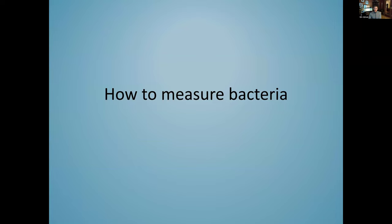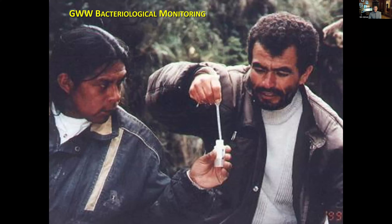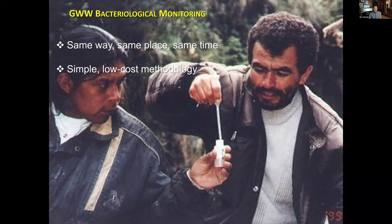Let's talk about how we measure bacteria. Global Water Watch always emphasizes doing it the same way, same place, same time — they want you to be consistent and use consistent methodology. In terms of same time: in colder months bacteria don't survive as well, so in warmer months you may find higher numbers than in winter. Their philosophy is to give people simple, low-cost methodology, teach consistent techniques, and they'll generate credible data.